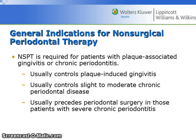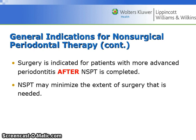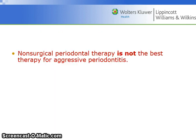General indications for non-surgical periodontal therapy: it is required for patients with plaque-associated gingivitis or chronic periodontitis. It usually controls plaque-induced gingivitis and slight to moderate chronic periodontal disease. It usually precedes periodontal surgery in patients with severe chronic periodontitis. Surgery is indicated for more advanced periodontitis after non-surgical therapy is completed. Non-surgical therapy may minimize the extent of surgery needed. Non-surgical periodontal therapy is not the best therapy for aggressive periodontitis.